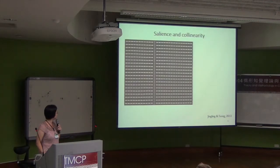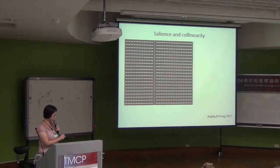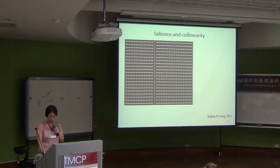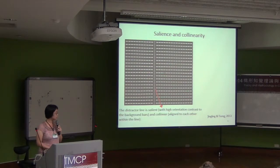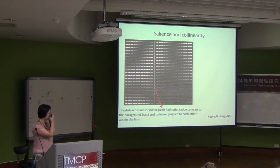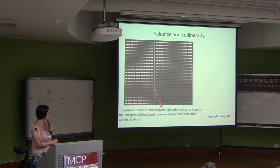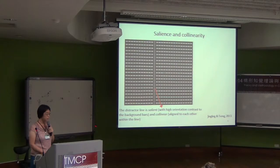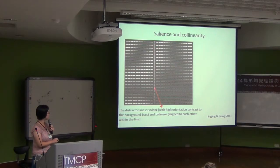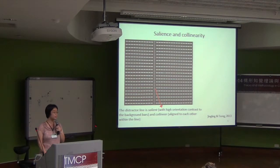We tried to create this condition and found that it actually masks you from finding the target. We made all the display filled with horizontal bars. In this condition, we have one column that is all vertical bars. We call this the distractor because it is not the target. It's very salient because there is a 90-degree orientation contrast, and also it's well grouped because they are all head-to-tail, collinear to each other — so this is a well-grouped and salient distractor.